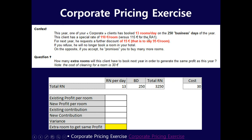This year, one of your corporate clients has booked 13 rooms per day on 250 business days — exclusive of weekends and holidays like Christmas and New Year's. This client has a special rate of 110 euro per room. Your rack rate is 115, which you usually sell to the public. For next year, they request a further discount of 15 euro.